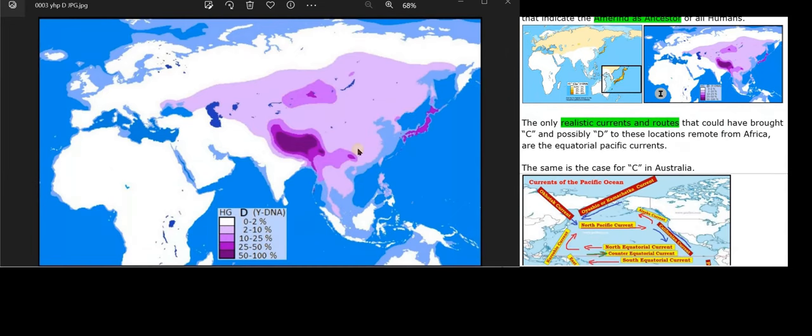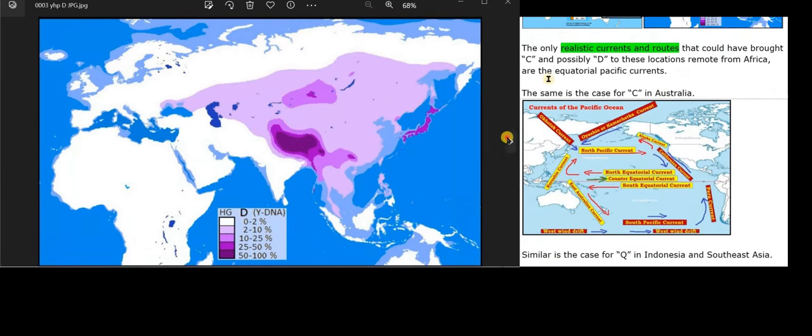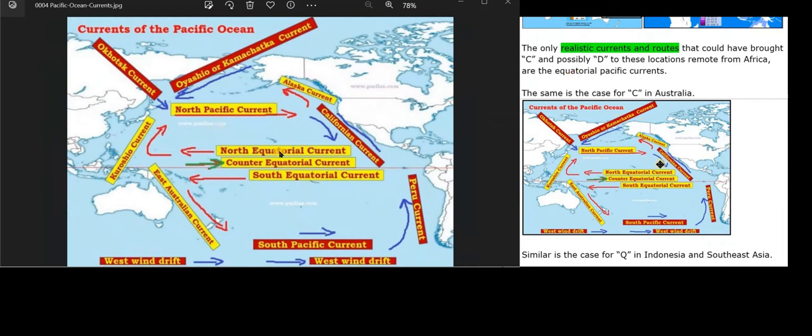The only realistic currents and routes that could have brought C and possibly D to these locations remote from Africa are the equatorial Pacific currents. The same is the case for C in Australia.